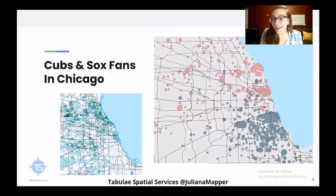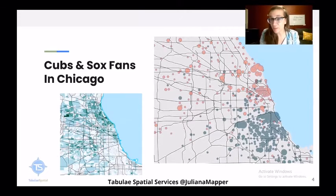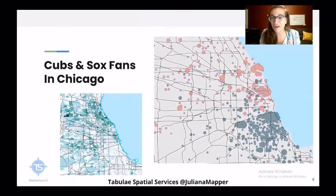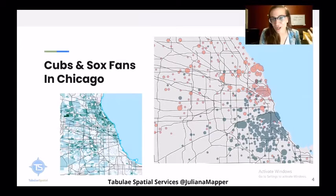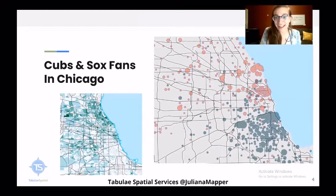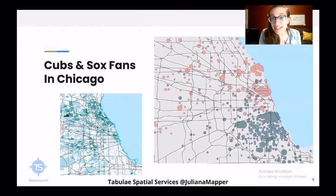One of the other things I was able to do is the map on the right. At the census block group level — the lowest level of aggregation within the United States, with a similar level available within the Canadian SafeGraph data — we're looking at the ratio of the number of Cubs fans to Sox fans, measured by the number of devices that went to their respective ballparks. The bigger the circle, the larger the ratio for that team. And you can actually see a pretty clear line right about here — sort of like that — of where the Cubs fans and Sox fans divide.